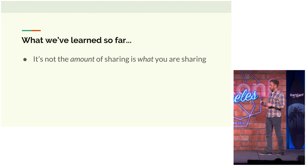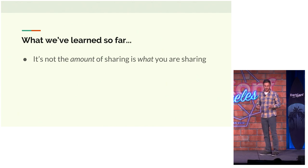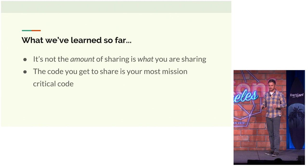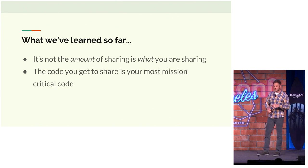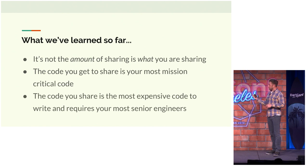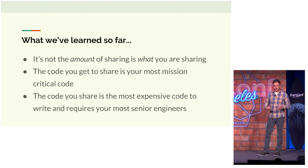70% is a great number, but it's not the amount of code that you're sharing that really matters — it's what code you're sharing. What we're sharing is the most mission-critical code: the stuff dealing with security, persistence, and talking to our services — and it's where you'll find most of your bugs. It's also the code that is the most expensive to write, requiring your most senior engineers, and it's the most expensive to maintain.